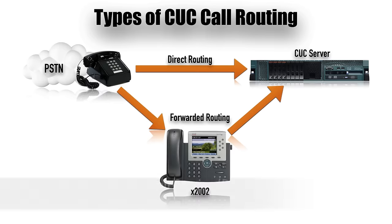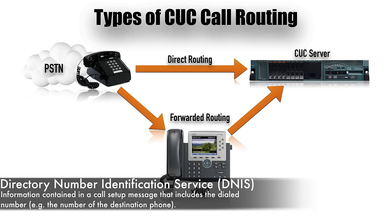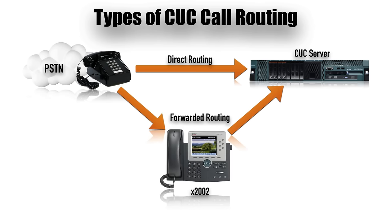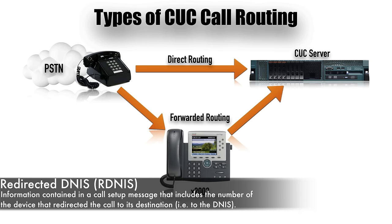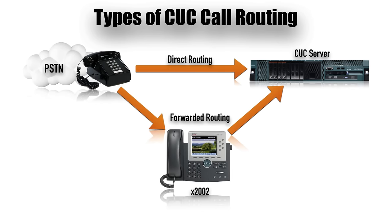Two terms explain this. DNIS — D-N-I-S, Directory Number Identification Service (also called Dialed Number Information Service) — represents the dialed number. If I dial the voicemail server directly, the DNIS is the voicemail server's number. But if a call to extension 2002 is diverted to Unity Connection, the DNIS is still the CUC server's directory number. The key is R-DNIS, Redirected DNIS, which says this call was redirected from extension 2002. If Cisco Unity Connection sees R-DNIS information coming in, it knows the call came from a phone and, if it has a mailbox for that phone number, it plays that user's outgoing message.